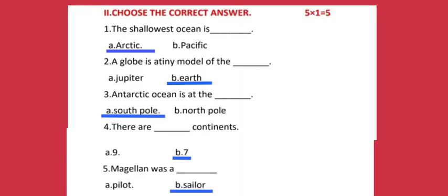Section two: Choose the correct answer. Number one: The shallowest ocean is — Option A: Arctic, Option B: Pacific. The correct answer is Arctic. Number two: A globe is a tiny model of the — Option A: Jupiter, Option B: Earth.